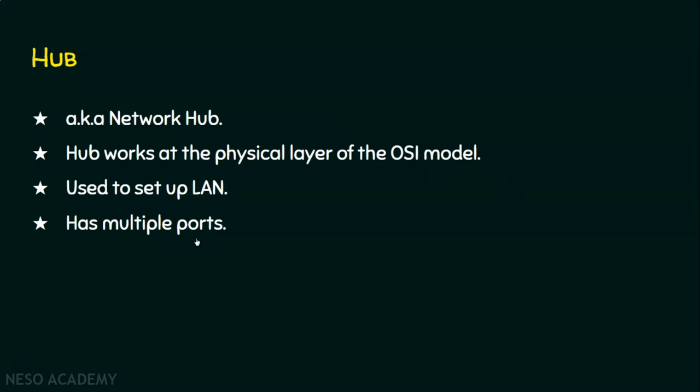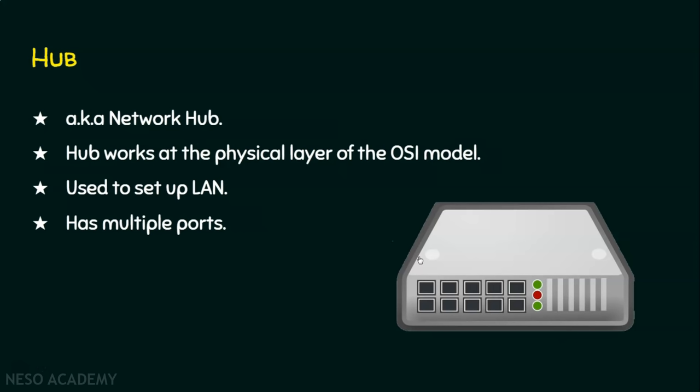For example, if a hub has 10 ports, I can connect 10 computers through it. If I have 20 computers, no worries — bring another hub, connect the two hubs, and extend your network accordingly. We have a serious drawback with hubs, which we will see in the upcoming slides. The local area network formed using a hub falls under star topology, where there is a central device like a hub or switch connecting all devices.